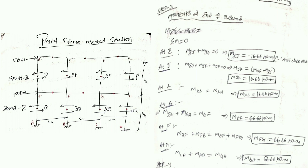For Step 3, we use joint equilibrium. At joint I, the moment in beam IJ equals the moment in column IE. Since we know the column moment IE from Step 2, we can find the beam moment in IJ. At joint E, the summation of moments in columns IE and EA equals the moment in beam EF, giving us the beam moment EF.